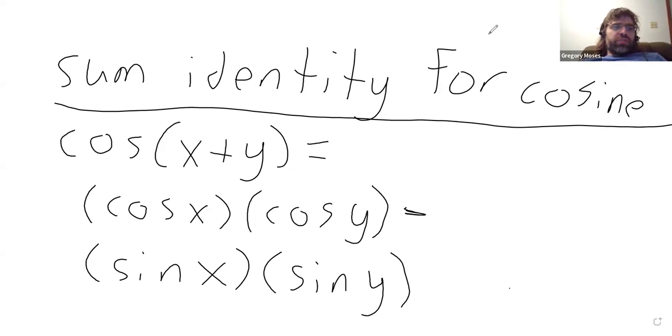So notice we have addition inside the parentheses. It becomes subtraction on the right-hand side of the equal sign. The cosine of x plus y is these cosines minus these sines.